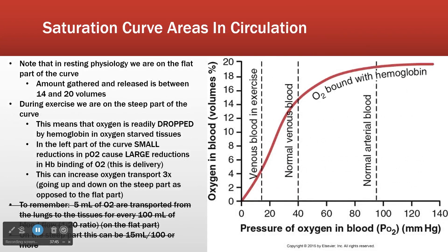If we look at the partial pressure of oxygen across the cardiovascular system in different states: in venous blood during exercise there's almost none, because all the oxygen is being used up by the busy tissue and what's coming back has been completely depleted. That isn't a problem because it will come to the lungs and get re-diffused back to a PO2 of 100. In normal venous blood, PO2 is between 15 and 40, and normal arterial blood is higher.